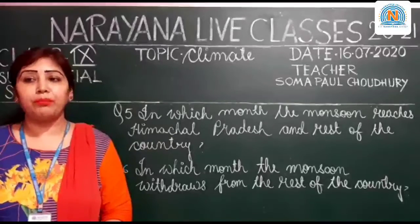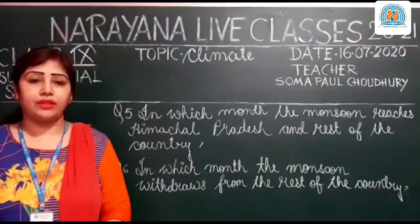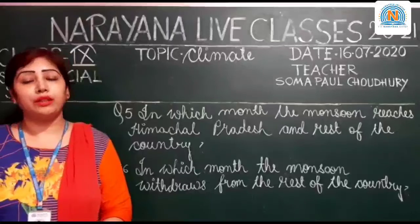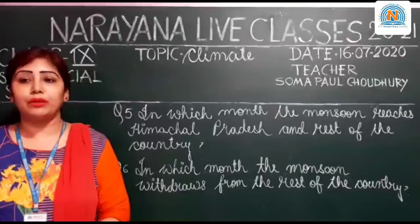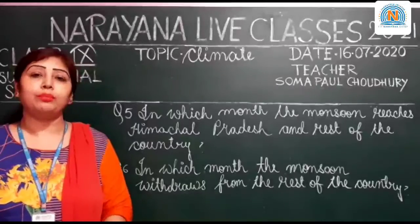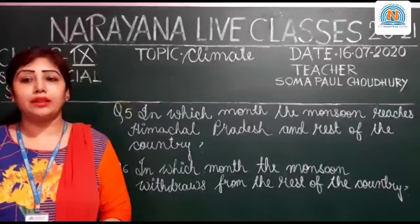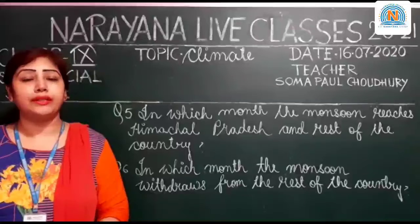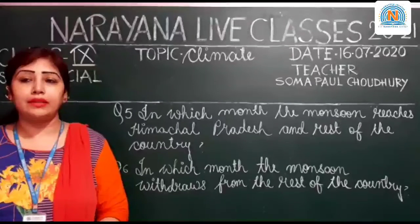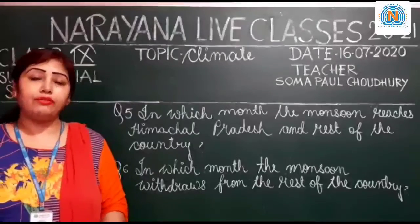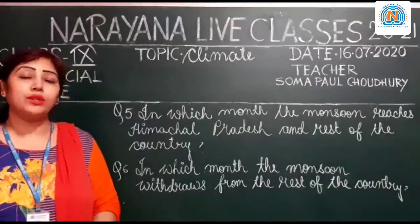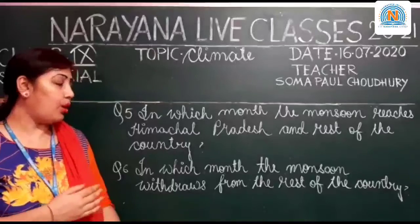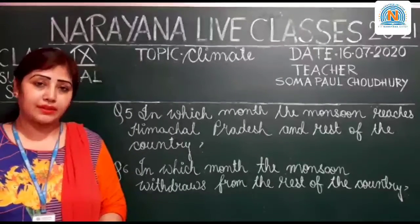Let's move on to question number six, last but not the least. In which month does the monsoon withdraw from the rest of the country? The answer is by early December. The withdrawal of monsoon is a gradual process; it begins in the northwestern states of India by early September, but the complete withdrawal takes place in the beginning of December. Each question from number one to six is connected to each other. Thank you so much.